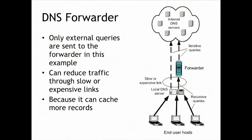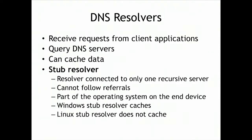A DNS forwarder caches more records — it sends iterative queries upstream and caches the results, limiting traffic in areas with expensive bandwidth. The Windows stub resolver is part of the operating system and caches DNS records; you have to run 'ipconfig /flushdns' to clear it. So if you get a bad DNS result, it can linger on your machine for some time.